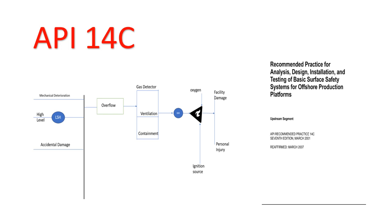In this lecture we will be discussing API 14C: what it is, what its different parts are, what is a safety flow chart, how it is developed, and how safety analysis is done — all with practical examples. The heading of API 14C reads 'Recommended Practice for Analysis, Design, Installation and Testing of Basic Surface Safety Systems for Offshore Production Platforms.' Although it is related to offshore production platforms, it is a very good standard and can also be used for onshore facilities.